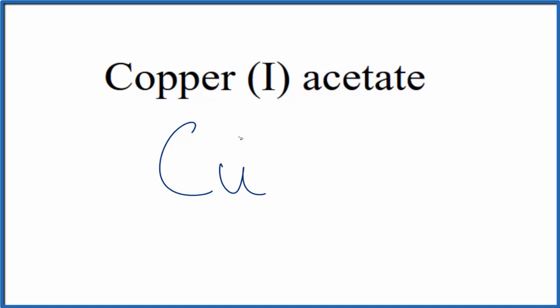And this 1 here, this Roman numeral 1, that means that copper is 1 plus. The acetate, you won't find that on the periodic table. The acetate ion, we see this A-T-E, it's a polyatomic ion.